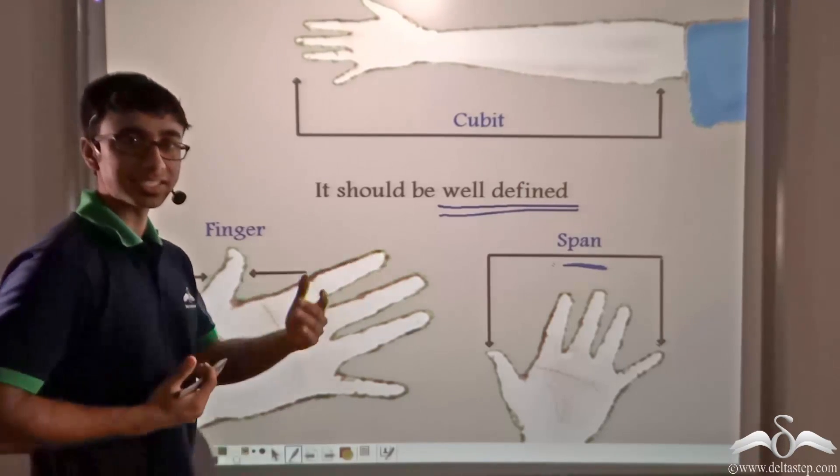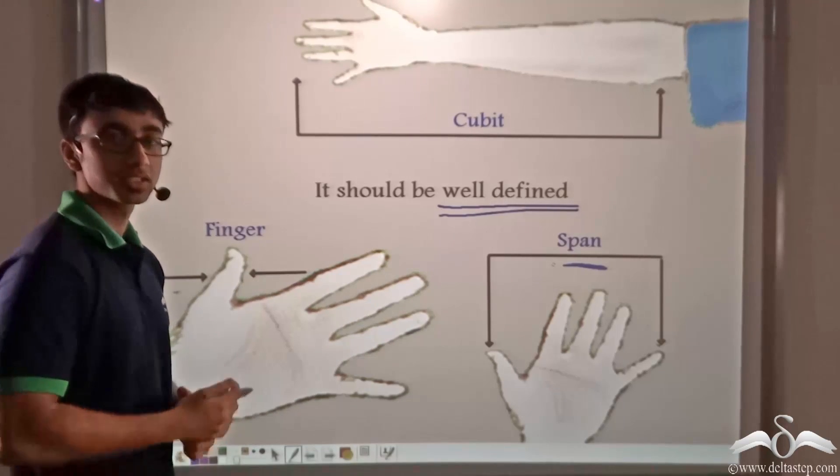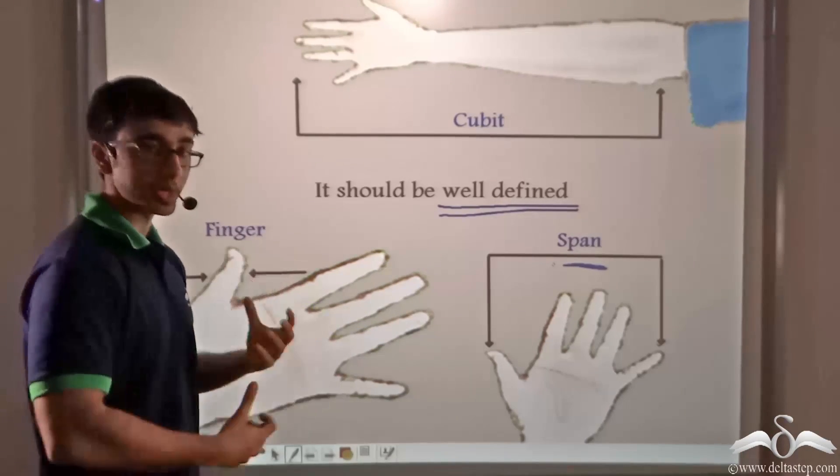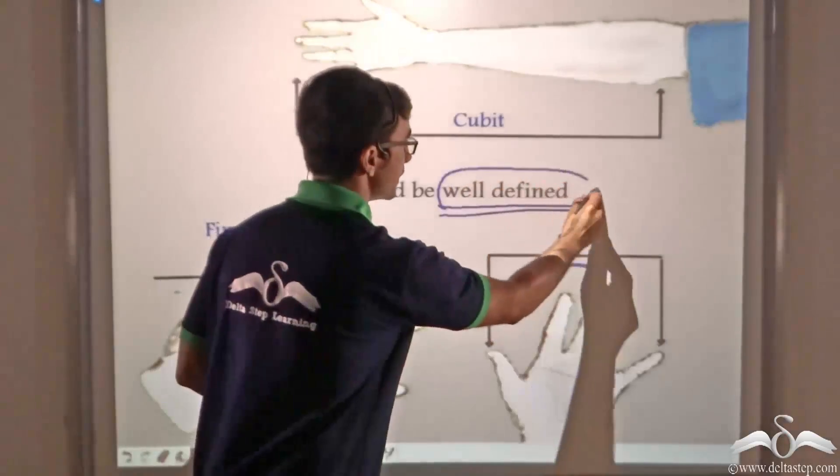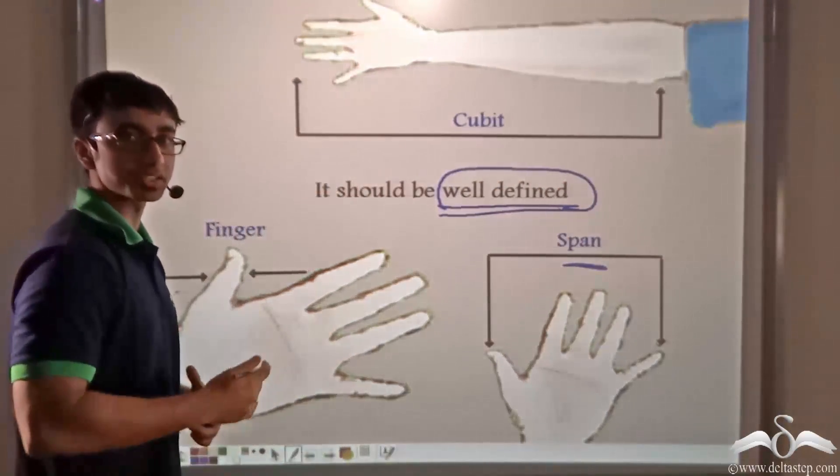Will they say that the distance is ten cubits or five cubits? Which one is correct? So in order to avoid this, the unit should be well defined and not vary from person to person.